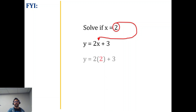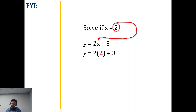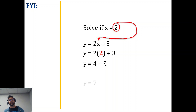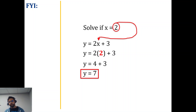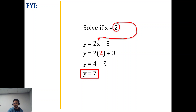If x equals two, it's now going to be two times two. So we really have four plus three, which means we have seven. So if x is two, y is seven — that would be an actual ordered pair. But remember, we're looking for a point of intersection, which is an actual ordered pair.